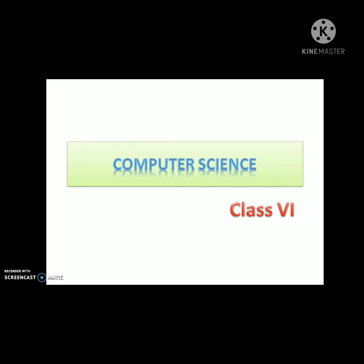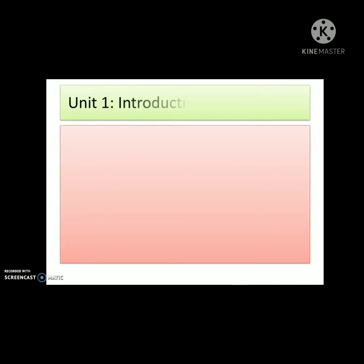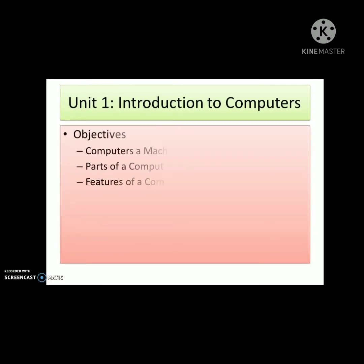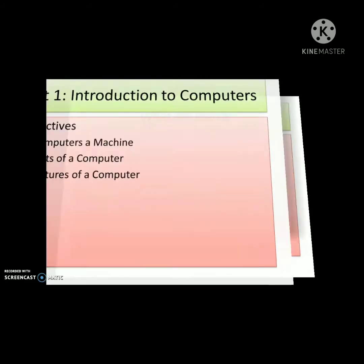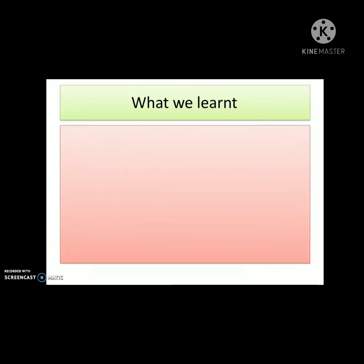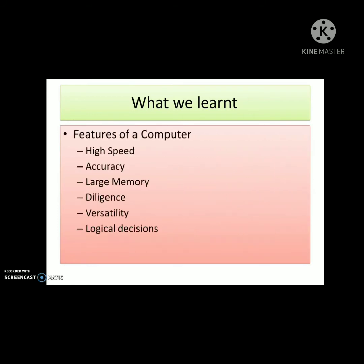We have been learning about Unit 1: Introduction to Computers. The objectives of this unit are: computer as a machine, parts of a computer, and features of a computer. We learnt that a computer is an electronic machine which can perform various activities. In the parts of a computer, we have learnt about hardware, software, and humanware.